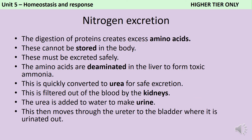If you're sitting the higher tier, you also need to describe the role of urination in removing nitrogen waste from the body. As we digest proteins, protease enzymes break them down into amino acids, which can't be stored in the body and need to be excreted safely. In the liver the amino acids are deaminated — an amine group is removed — forming toxic ammonia, which is almost immediately converted to urea. This urea is then filtered out of the blood by the kidneys, water is added, and this makes urine which moves through the ureter to the bladder.